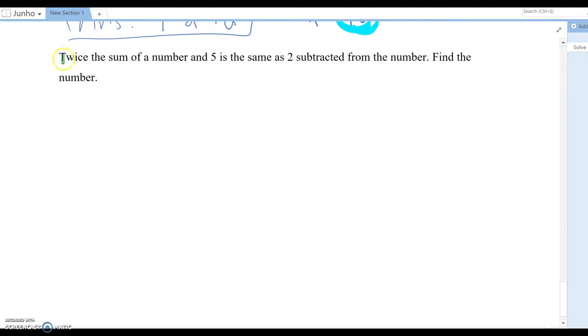So here, first of all, twice it came first, which means you are multiplying. That will be a priority calculation. So I can write two times, and then the sum of a number and five, which means you can write this, a number and five.